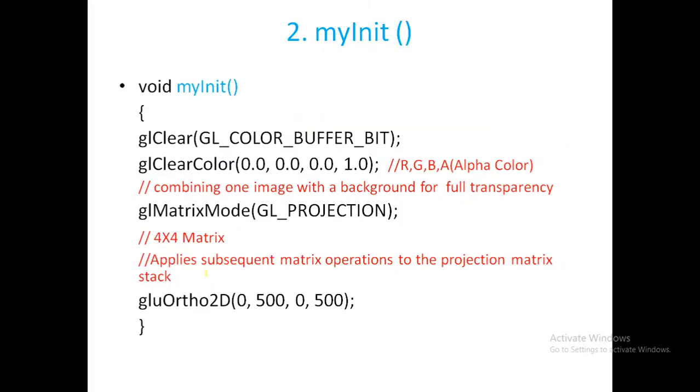In myInit, the first command, glClear, clears the color buffer. Every time the output changes, like when you resize the window, the previous color should be cleared. Next is glClearColor(0.0, 0.0, 0.0, 1.0), which sets the background color. 0,0,0 means black color; the last one is alpha color.